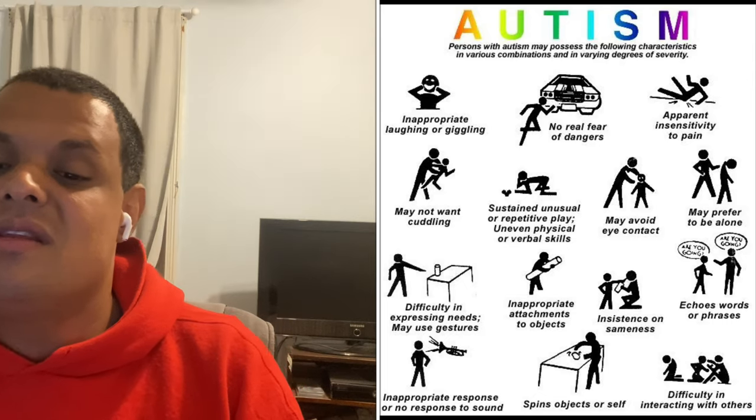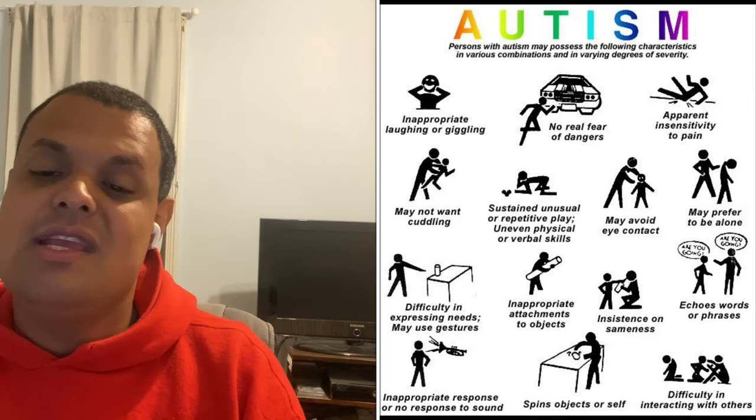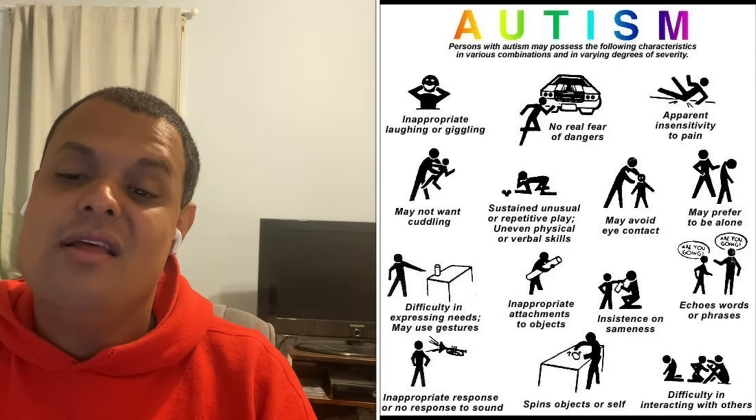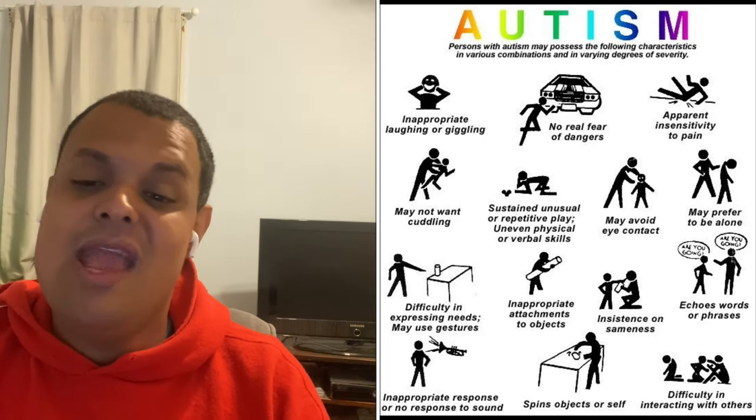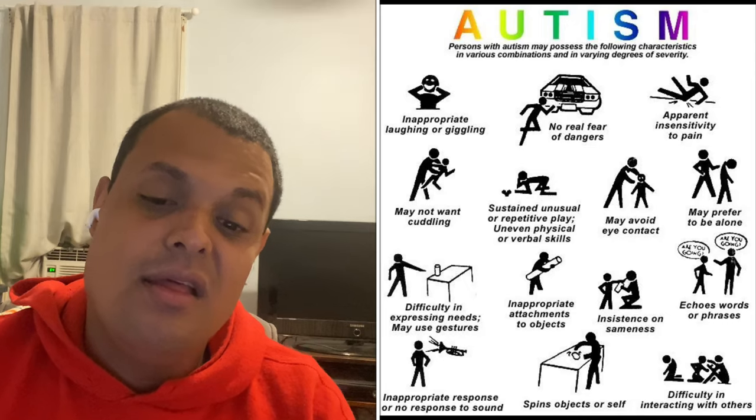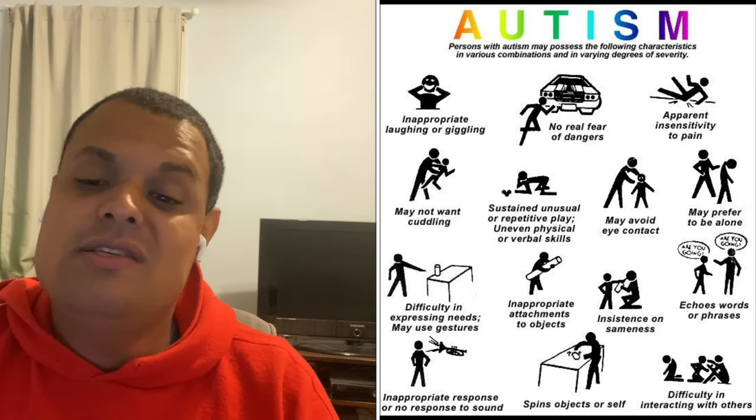Sometimes when autistic kids run away and go missing, they don't understand that the area around them is dangerous.